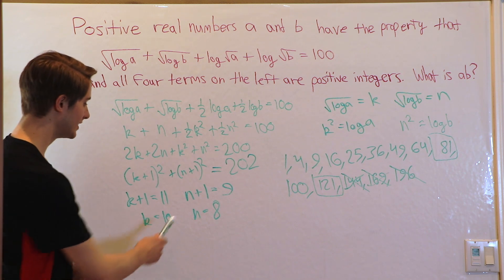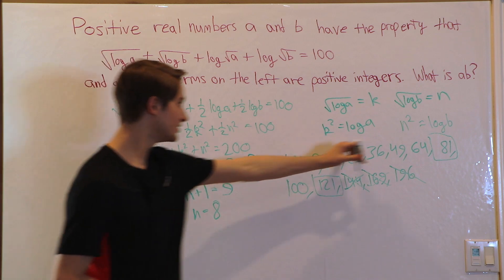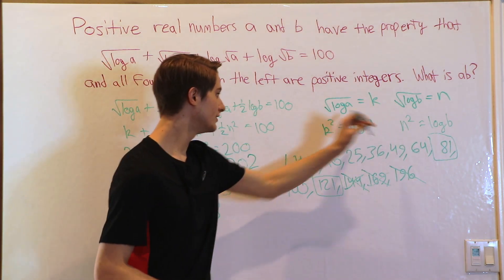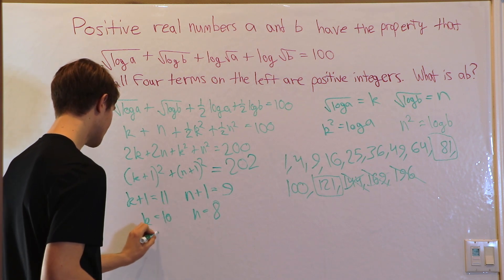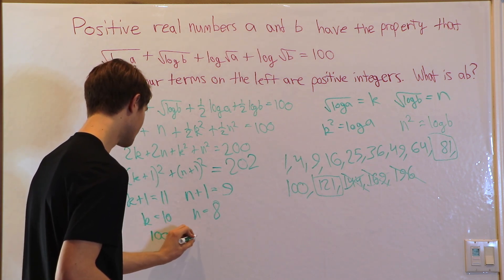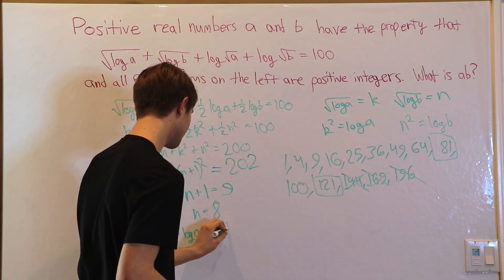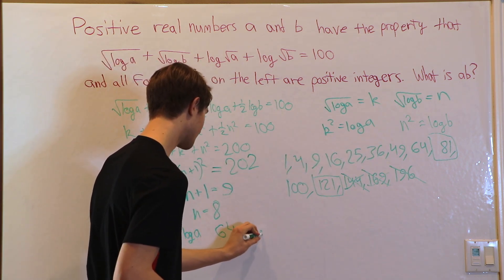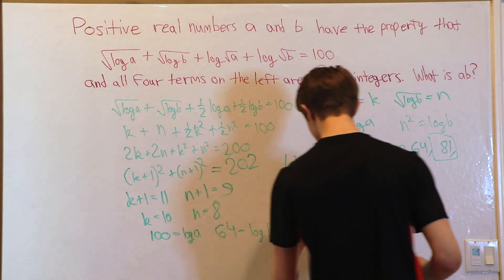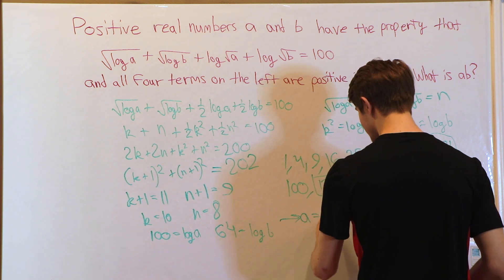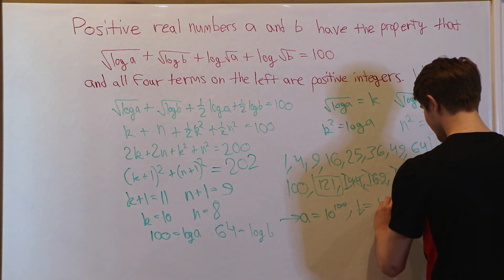Now we just have to go back to A and B. So let's plug each of these into our equations here and figure out what A is. For this one, K squared is 100 equals log A. And for N, N squared, 8 squared is 64 equals log B. So if we do 10 to each side, that means we get A equals 10 to the 100 and B equals 10 to the 64.